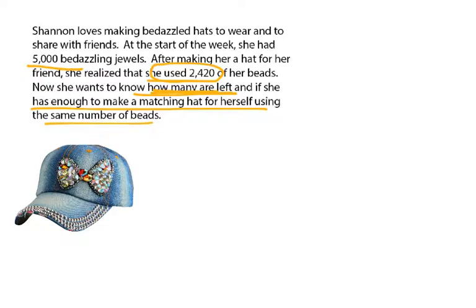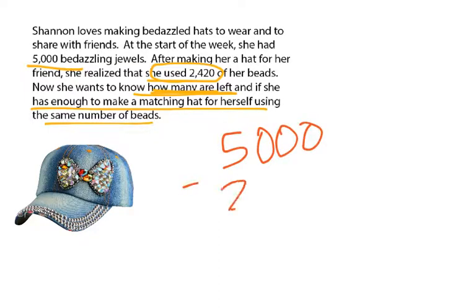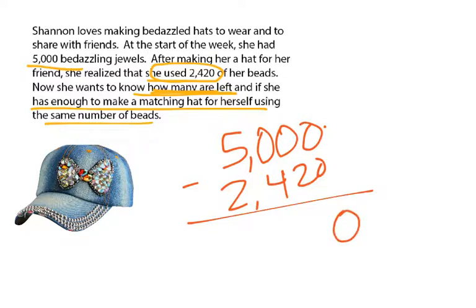I really have two questions here that I need to answer. The first question is how many jewels are left. To answer that question, I will take how many she started with — which was 5,000 — and I will simply subtract the 2,420 from that. When I start subtracting this, I have 0 minus 0, which is nothing. Then I get to 0 minus 2 in the tens place. If I have 0, I cannot take 2 away from that, so I need to borrow.